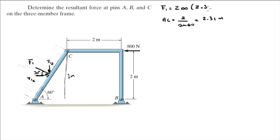So, you multiply this by 2.31 since it was a rectangular distributed load and you get that F1 is equal to 462 newtons.